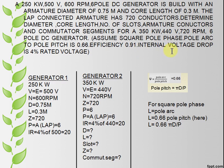We have two machines in this problem: generator 1 and generator 2. First write down the parameters given for each machine. For square pole phase we know L equals pole arc, L equals ψ into pole pitch. Given ψ equals 0.66, and we know pole pitch is πD by P.